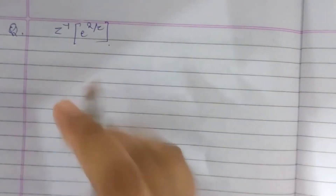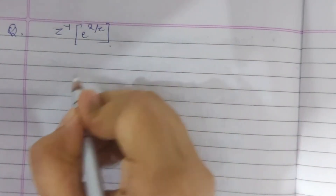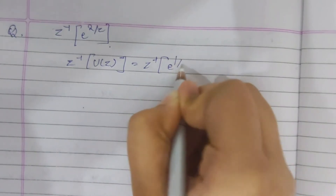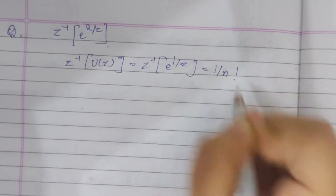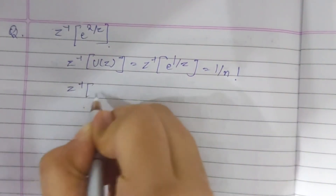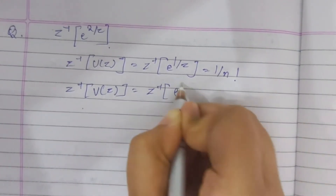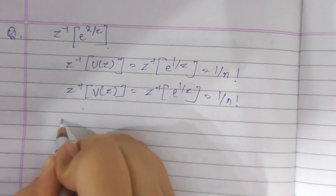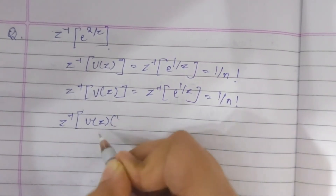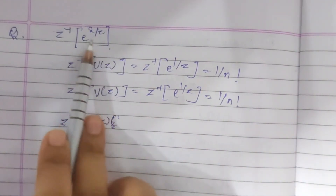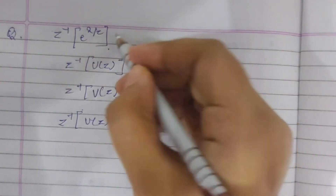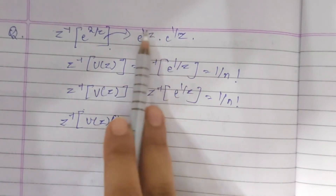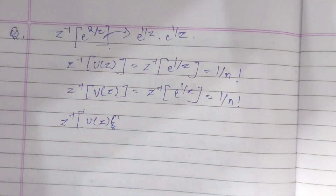Now let us take another question based on the convolution method: Z⁻¹[e^(2/z)]. We split this as e^(1/z) · e^(1/z), so U(z) = e^(1/z) and V(z) = e^(1/z). We know that Z⁻¹[e^(1/z)] = 1/n!, so both u(n) = 1/n! and v(n) = 1/n!.